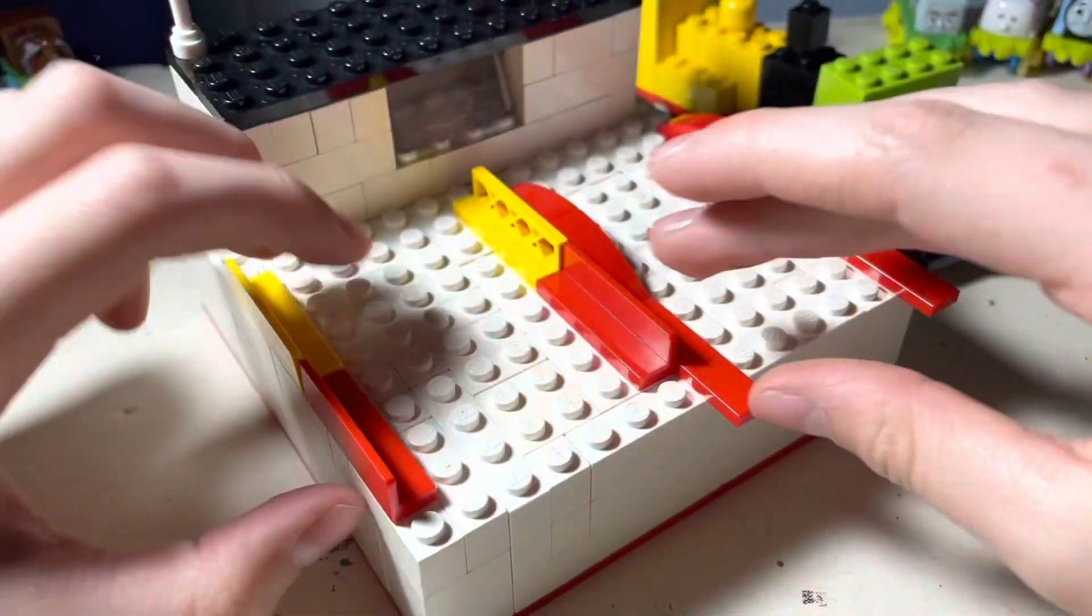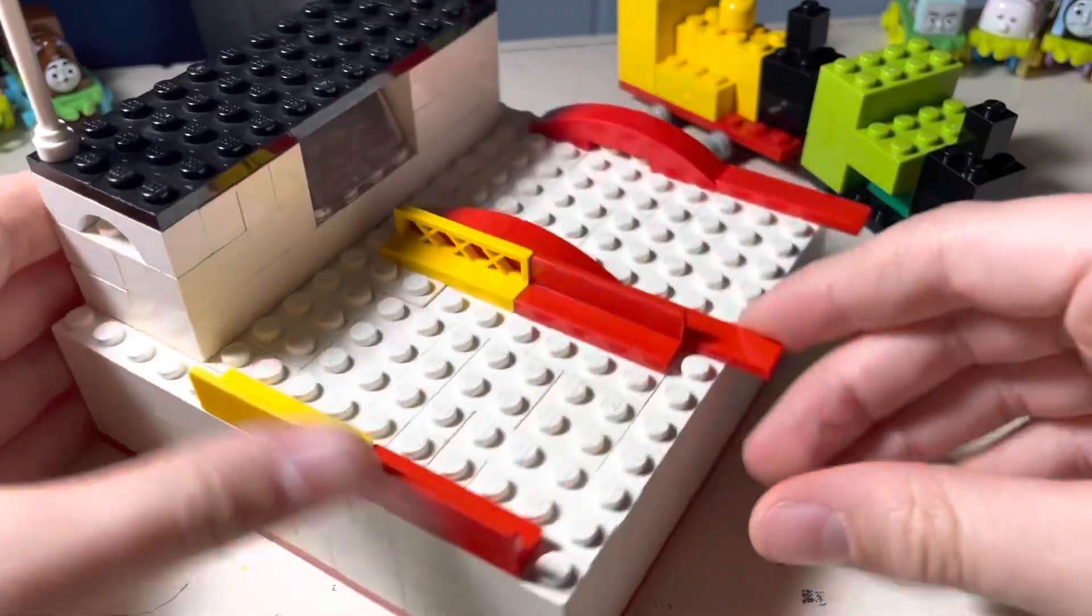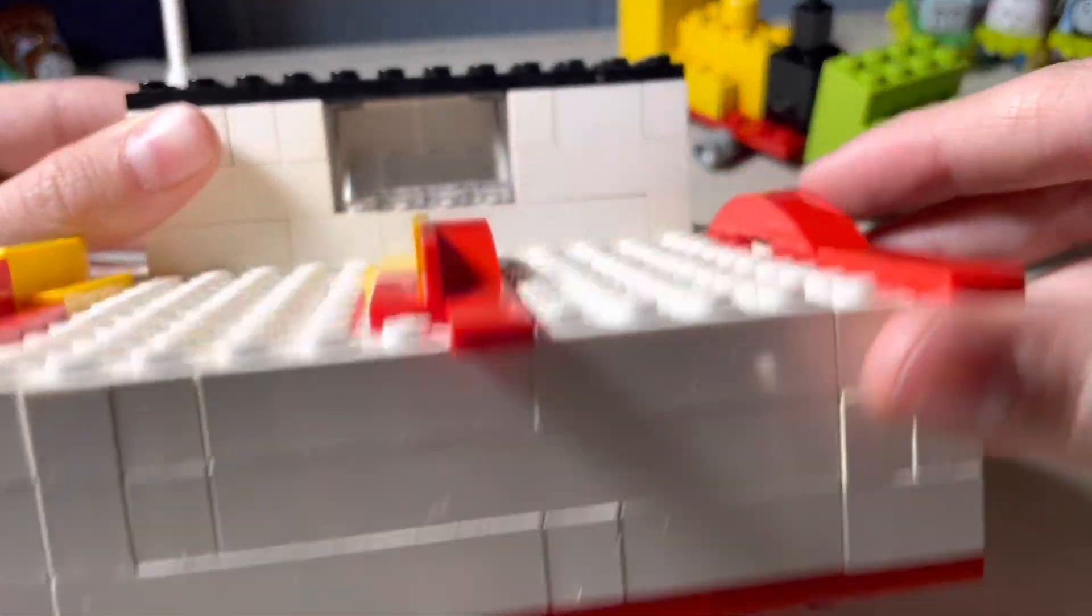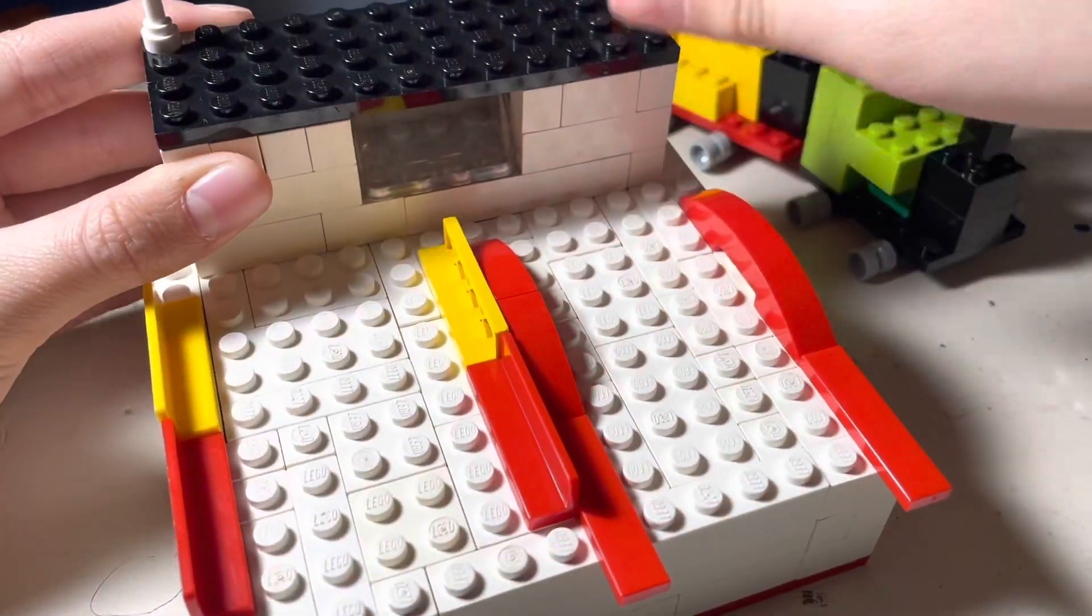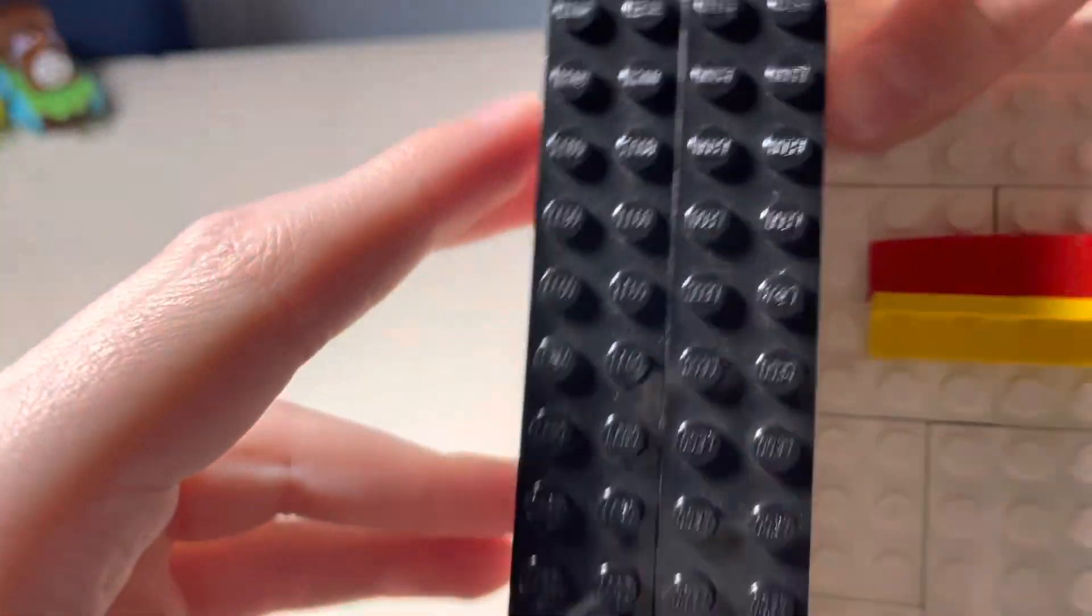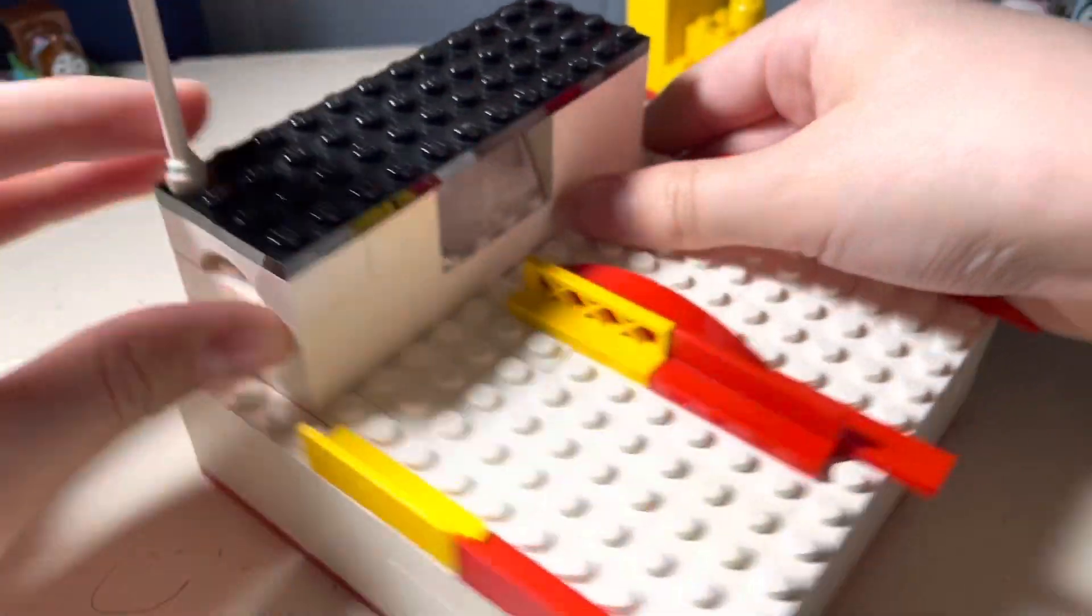I didn't fill it in all the way though. And then here's the cab, we got the window, some black plates, and this white antenna.